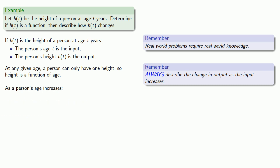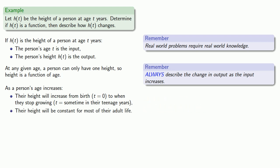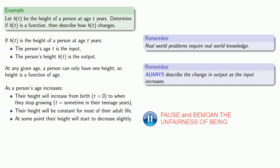If you know something about the real universe, you know that as a person's age increases, their height will increase from birth — t equals zero — to when they stop growing, t equals some time in their teenage years. Their height will be constant for most of their adult life. And at some point, their height will start to decrease slightly, due to things like osteoporosis.